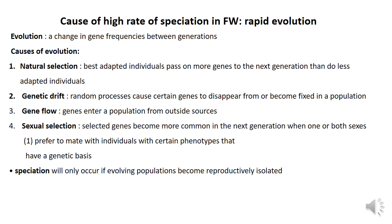There are different causes of evolution: natural selection, genetic drift, gene flow, and sexual selection. Natural selection means the best-adapted individuals pass on more genes to the next generation than less-adapted individuals. Natural selection can result in organisms more likely to survive and reproduce, and may eventually lead to speciation.